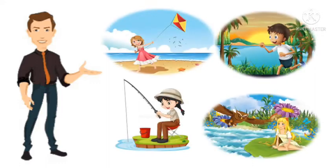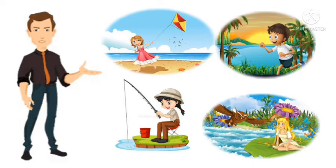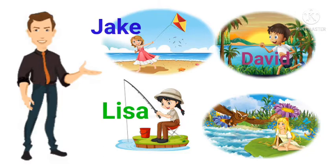Four cousins from different towns lived near different bodies of water. Their names are Jake, Lisa, David and Anna.